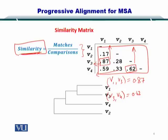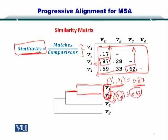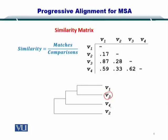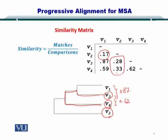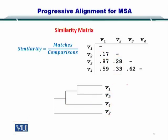Now you want to create a guide tree. You can see that V1 and V3, which had the most similarity, are placed on the same branch. Next, V3 and V4 had a score of 0.62, meaning they were slightly less similar, so V4 is placed next to V3. And in the end, you have V2, which scored the least in comparison to the other sequences. In this way, you have constructed something called a guide tree.